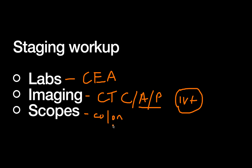Your colonoscopy needs to be complete. If you have a partially or fully obstructing lesion, the scope may not traverse past it, and they'll need an early repeat colonoscopy post-op, because there's a relatively high risk of synchronous disease — two colon cancers present at the same time. Also, you want to tattoo the lesion to identify it in the operating room, since it's very difficult to know exactly where something is anatomically via colonoscopy or CT.